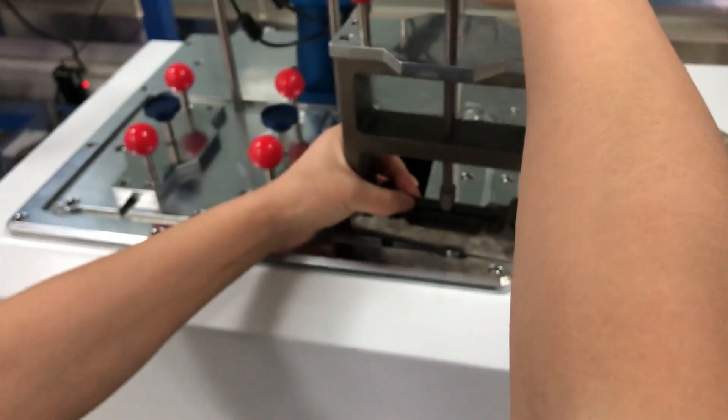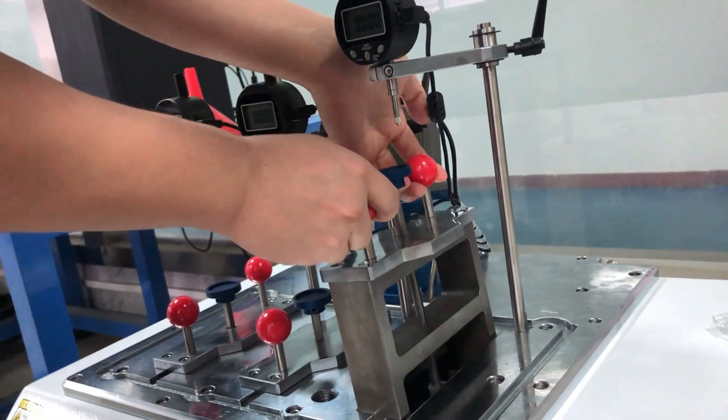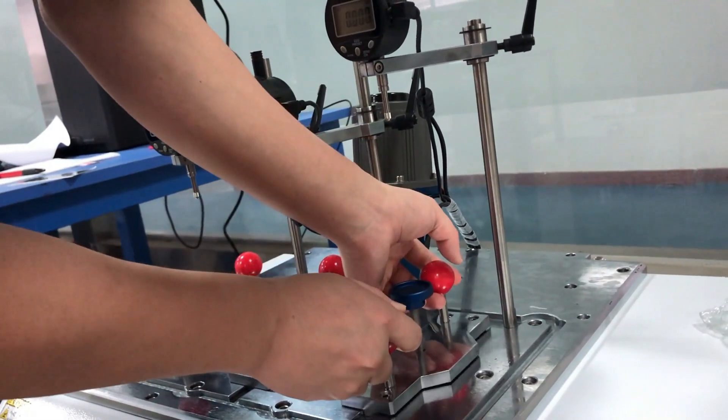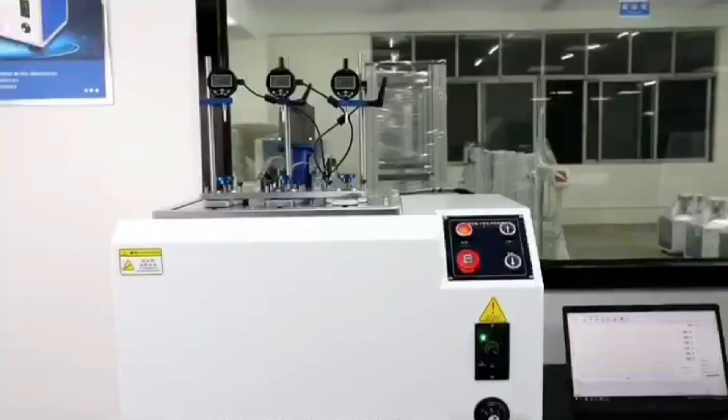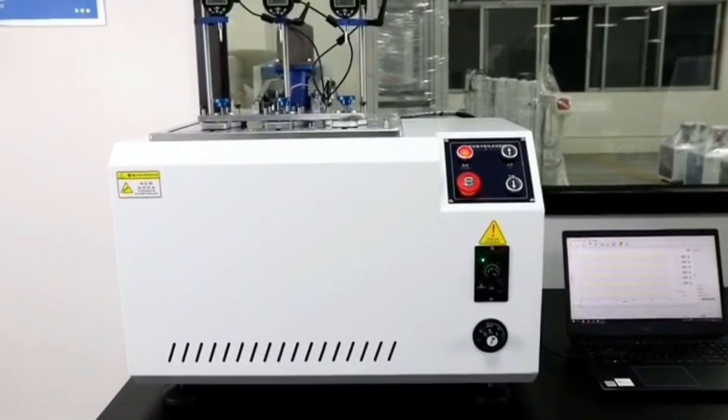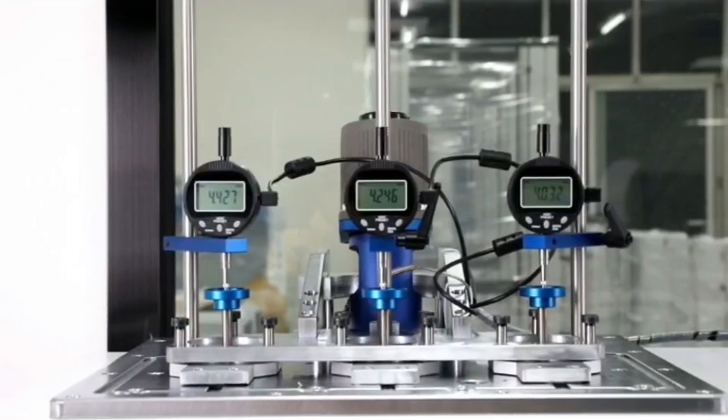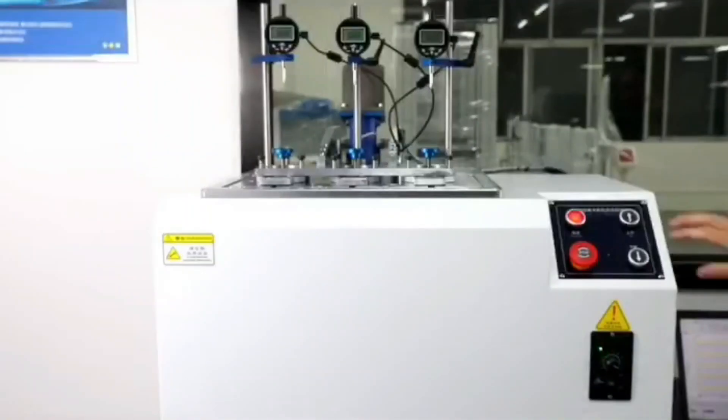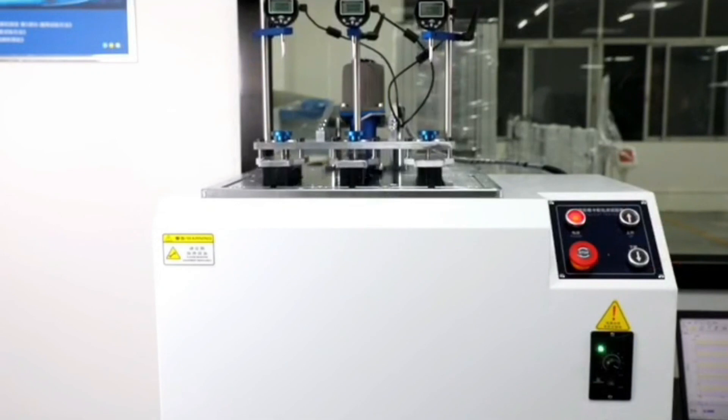Thermal deformation refers to the temperature at which the bending deformation of a plastic sample reaches 0.34 mm by heating at a rate of 50 degrees Celsius or 120 degrees Celsius per hour under a pressure of 0.45 MPa or 1.8 MPa.